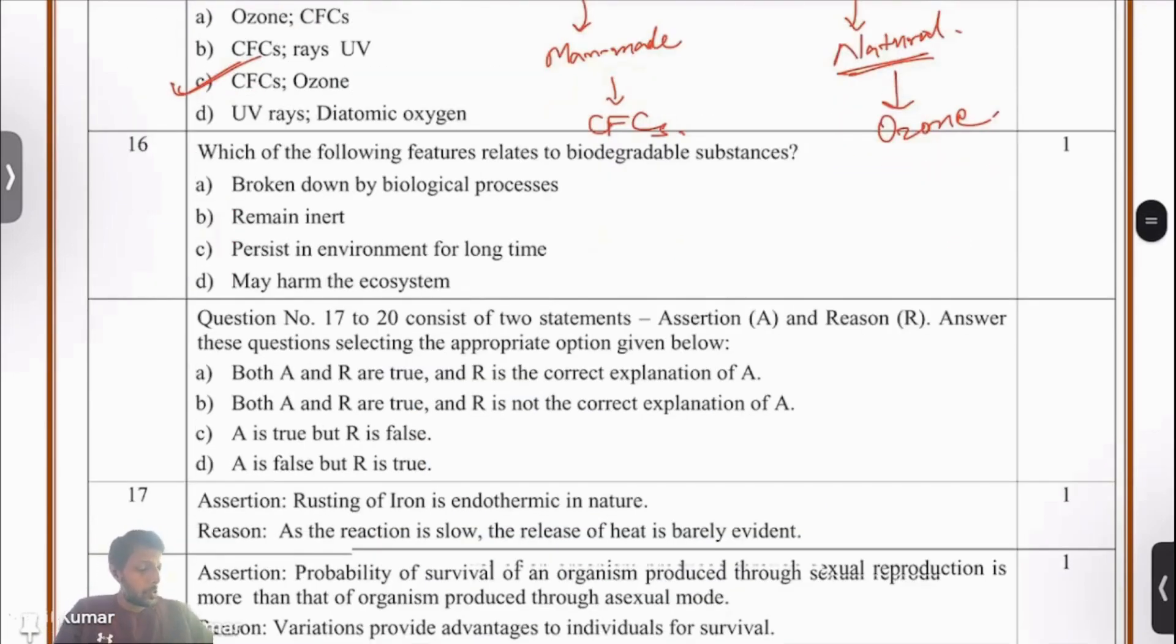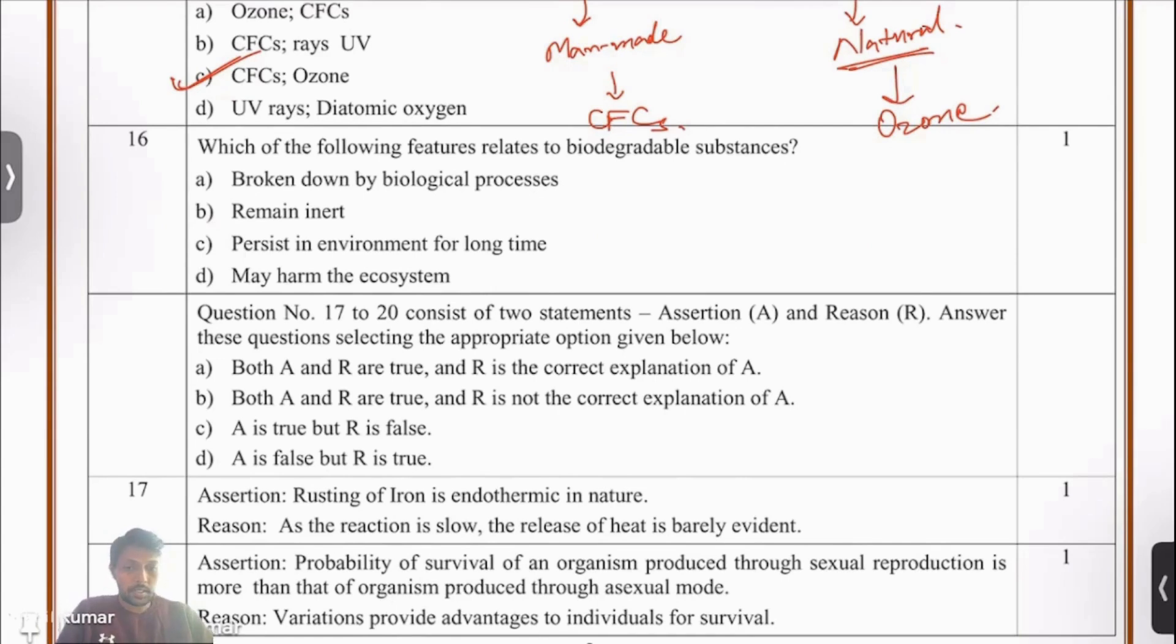Question number 16. Which of the following features relates to biodegradable substances? Let's break down this word biodegradable. This word means something that can be degraded. This gives us some hint. Let's look at the options. Biodegradable substances are broken down by biological process. So this option might be correct. Remain inert? No, they don't remain inert. They are broken down by biological process.